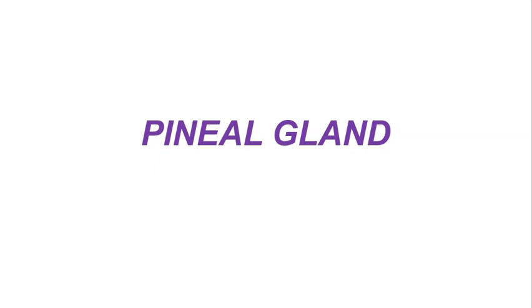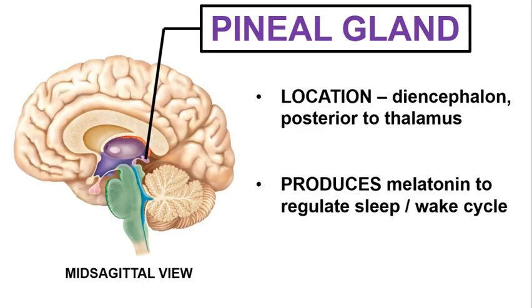We've completed our overview of the major endocrine glands, so now we will examine a few other endocrine functioning structures, such as the pineal gland. The gland is located in the diencephalon of the brain, just posterior to the thalamus. The pineal gland produces a hormone called melatonin, which functions to regulate our sleep and wake cycles.